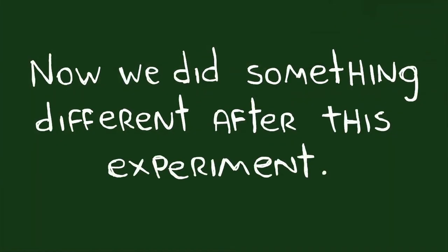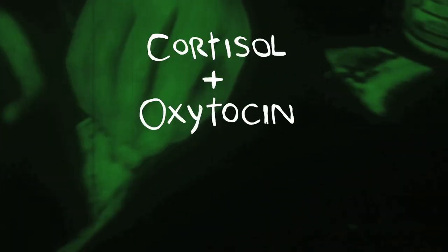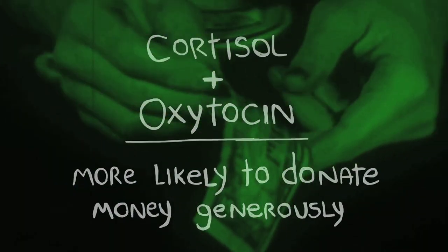Now, we did something different after this experiment. We gave individuals a chance to share money with a stranger in the lab. And indeed, those who produced both cortisol and oxytocin were more likely to donate money generously to a stranger they couldn't see in the lab.